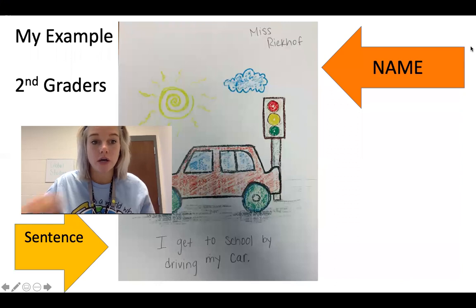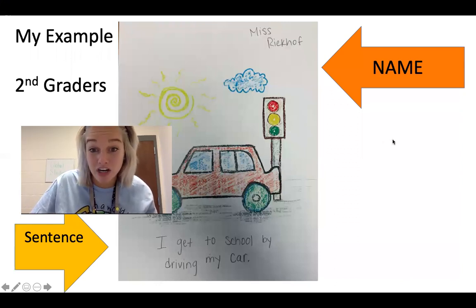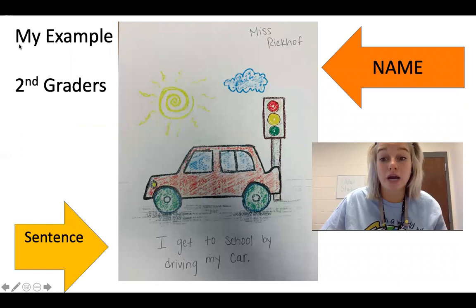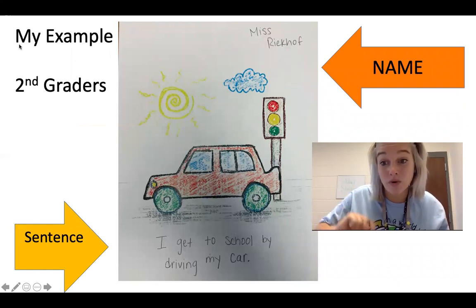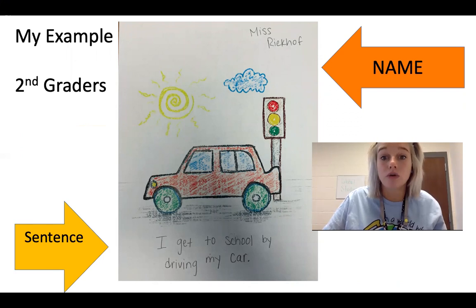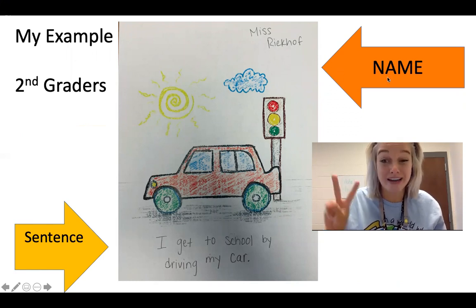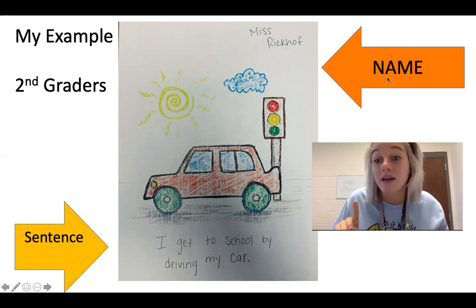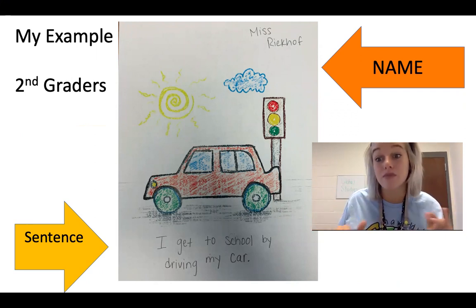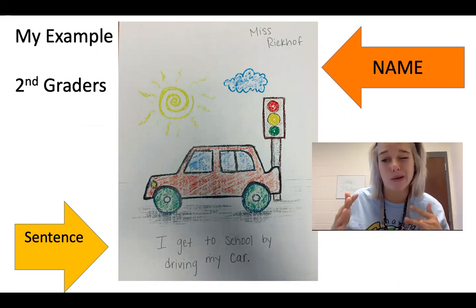So you're going to be drawing a picture. This is my example for my second graders. Second grade, I want you guys to write one sentence going with your picture of how you get to school. You can see this is my example — I wrote, 'I get to school by driving my car.' Then you need to have your name on it. For second graders I want one sentence, and if you want to write more than one sentence, that's totally fine.